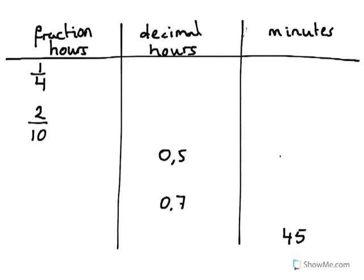How do we change fraction hours into decimal hours, and then change them from decimal hours into minutes? Here we have a quarter of an hour. If we can't remember that a quarter is exactly the same as the decimal 0.25, it's not a problem, because the way to convert a fraction to a decimal is to just do the division.